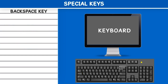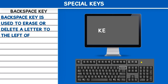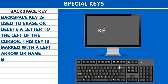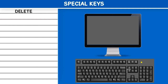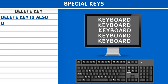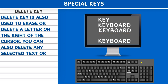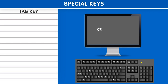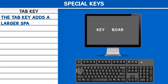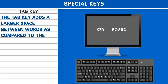Backspace key: The Backspace key is used to erase or delete a letter to the left of the cursor. This key is marked with a left arrow or has the name Backspace written on it. Delete key: The Delete key is also used to erase or delete a letter to the right of the cursor. You can also delete any selected text or image. Tab key: The Tab key adds a larger space between words as compared to the Spacebar.